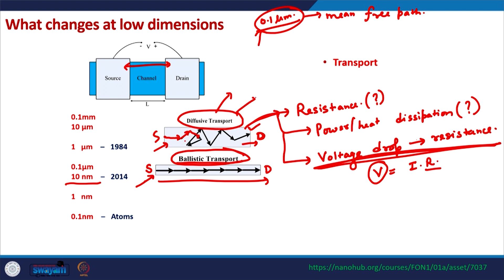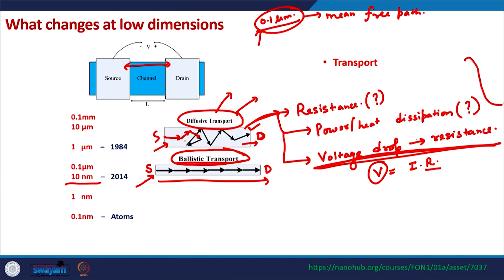These questions cannot be answered from our conventional understanding of transport — the conventional diffusive transport understanding of resistance — because in that case resistance was because of collisions in the channel, which also contributed to heat dissipation and voltage drop. But now none of that is happening and we need to ask these questions in a fundamentally different way. This course will try to answer what is resistance, power drop, heat dissipation, and voltage drop in nanoscale or mesoscopic devices where channel length is a few tens of nanometers.